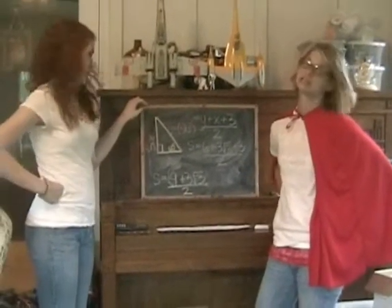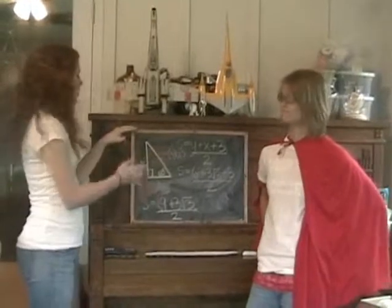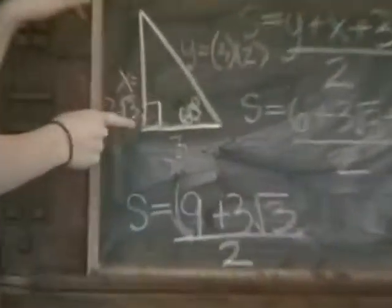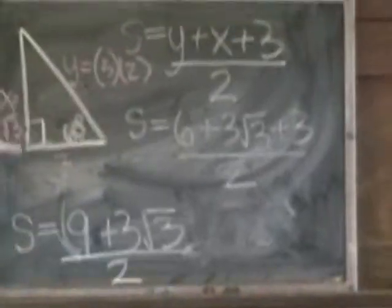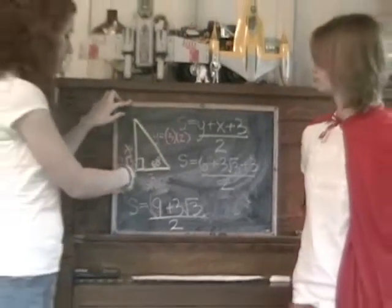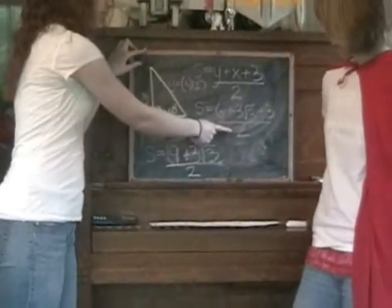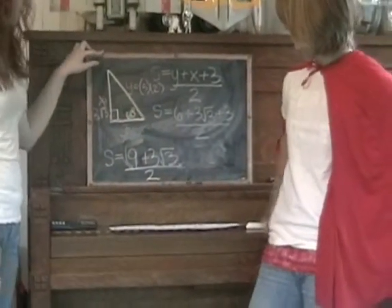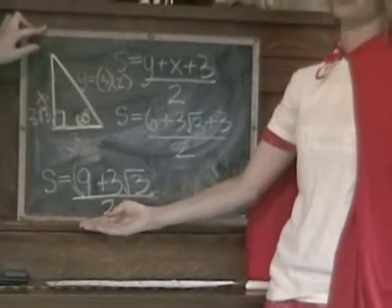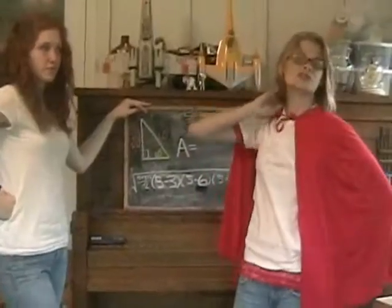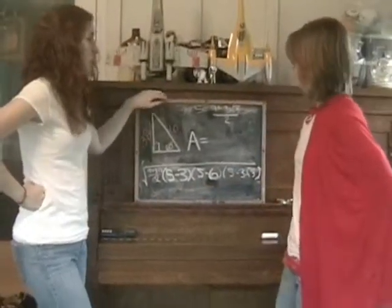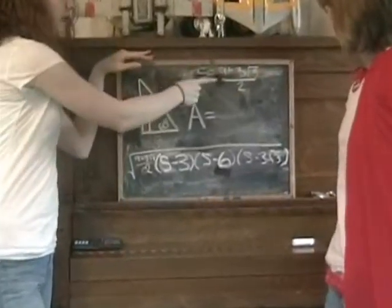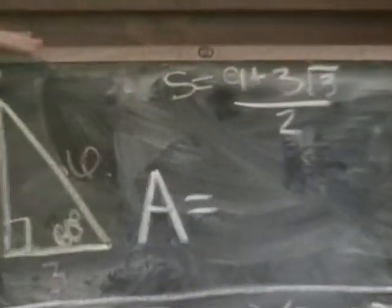Now, for another example of how to use Heron's formula. Since we know that this is a 30-60-90 triangle, we can use that knowledge to figure out what x and y equal, which y would equal 6 and x would equal 3 root 3. Then, you would add that to the side we already know, which is 3, divided by 2 to get the semi-perimeter, which is 9 plus 3 root 3, divided by 2. Now, to conclude this problem, we shall plug it into the formula using the semi-perimeter of 9 plus 3 root 3 over 2.